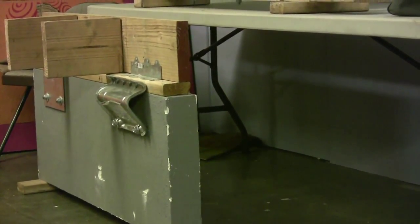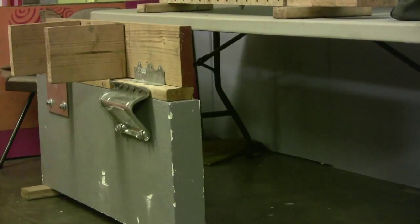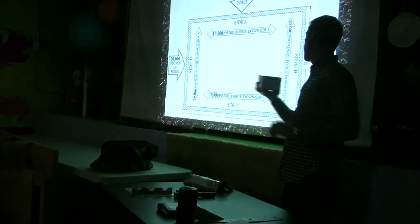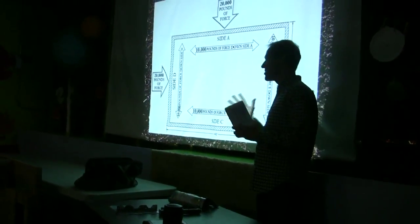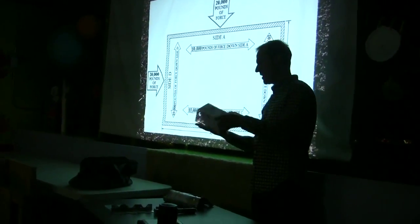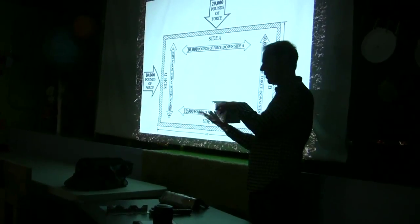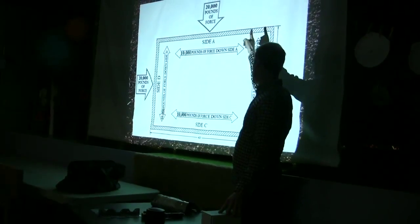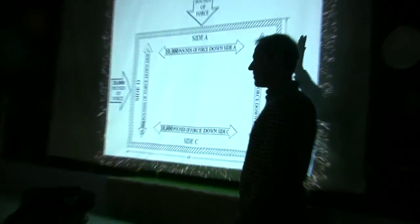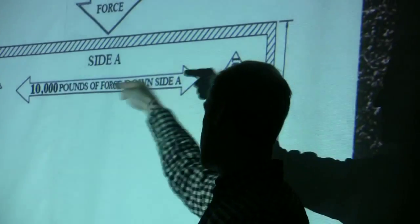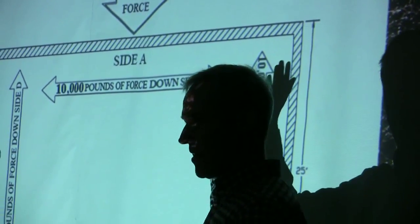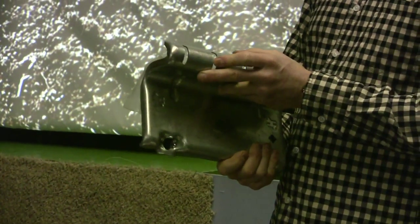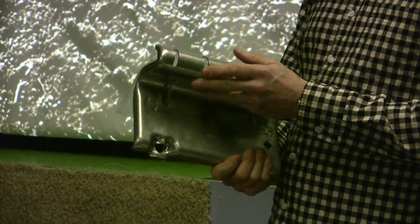Your house sits on top of that, and wherever your house wants to go, it is taking that floor diaphragm with it. We calculate this mythical house to be about 80,000 pounds in weight. We've got 80,000 pounds going in any direction. So if it goes in this direction, we need to have X amount of resistance. The amount of hardware you need to install on each wall is equal.